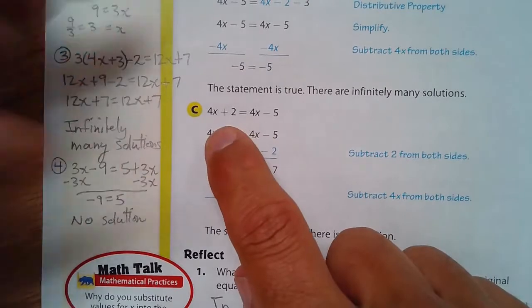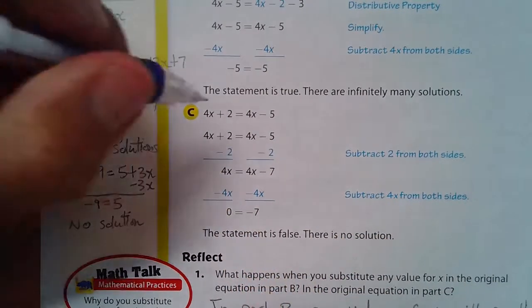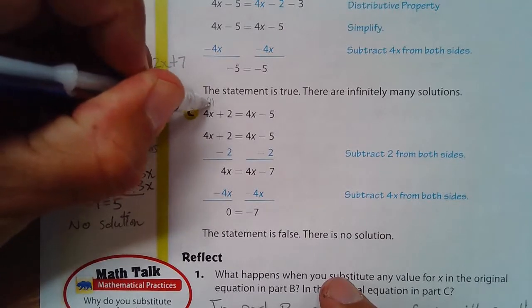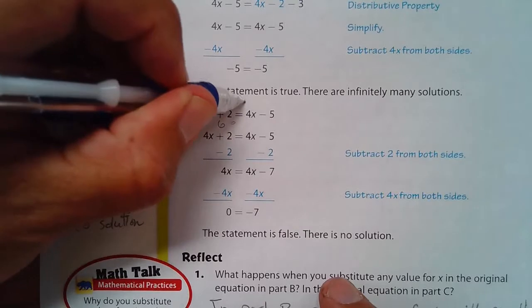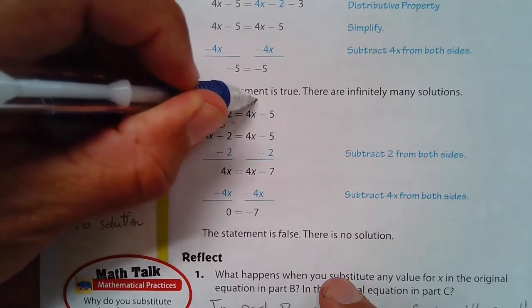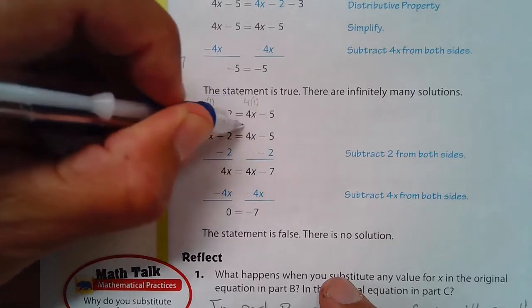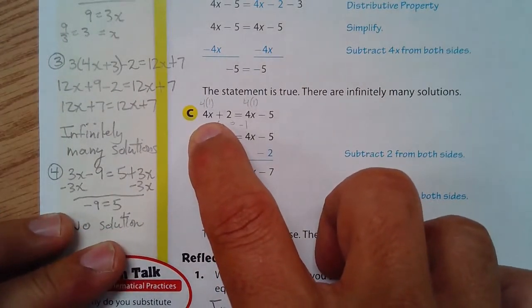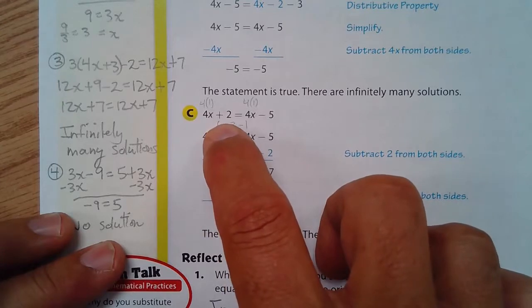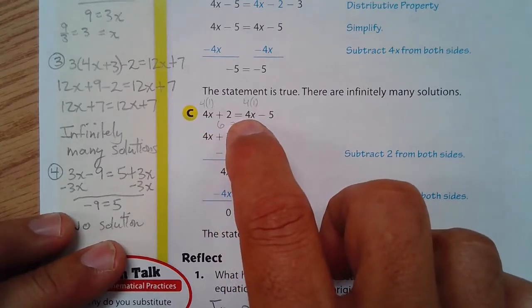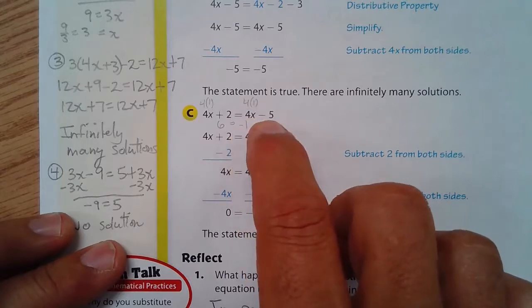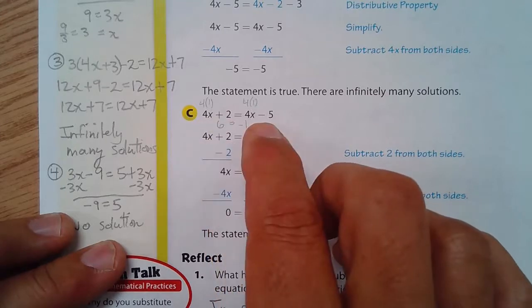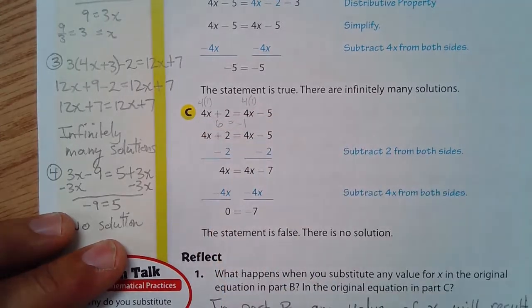Here, if I put 1 in for here, and okay, look at this. 4 times 1, that's 4. 4 plus 2 is 6. And then here, 4 times, put that 1. That's 4 minus 5 is negative 1. And if you think about it, if you multiply a number times 4 and add 2, how could you ever get 4 times that same number, subtract 5, and end up with the same result? You know, how could you add 2 and subtract 5 and expect to get the same number? You never will. That's why there's no solution.